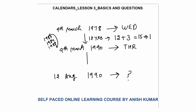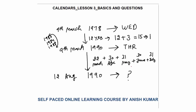Now move from 9th March to 12th August. After 9th March: March has 31 days, so 22 days remain in March. Then April has 30 days, May has 31 days, June has 30 days, July has 31 days, and 12 days for August. Now count odd days: 22÷7 → remainder 1; 30÷7 → remainder 2; 31÷7 → remainder 3; 30÷7 → remainder 2; 31÷7 → remainder 3; 12÷7 → remainder 5. Total: 1+2+3+2+3+5=16. 16÷7 → remainder 2. So 2 odd days after Thursday: Thursday+2=Saturday. So 12th August 1990 is Saturday.